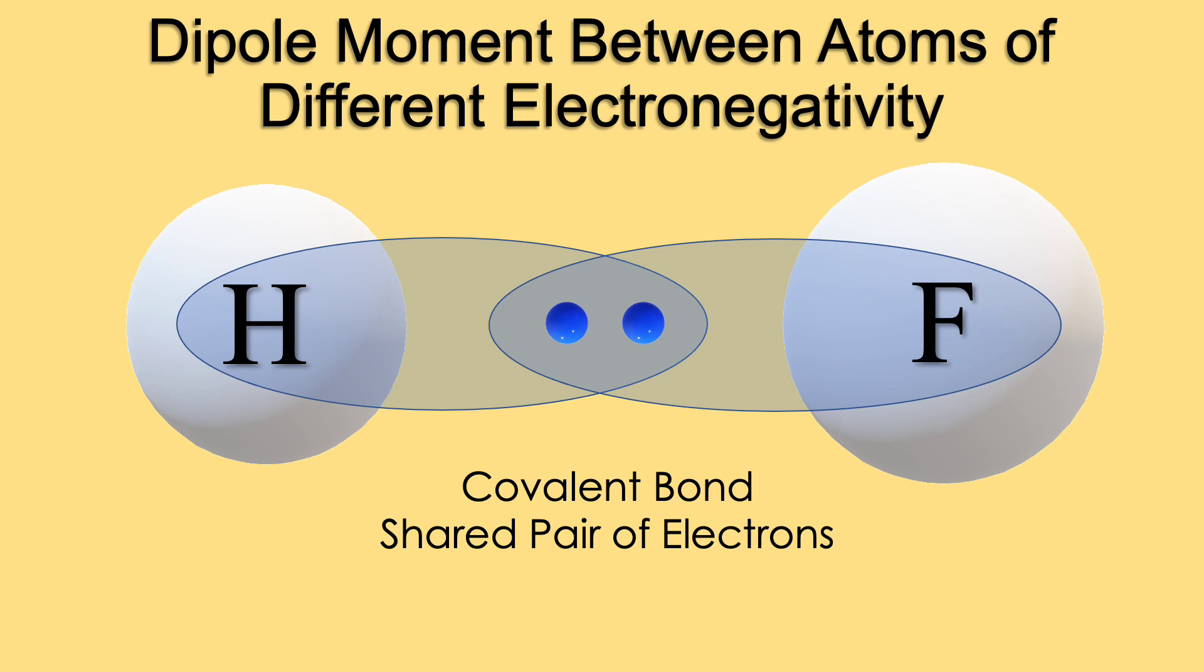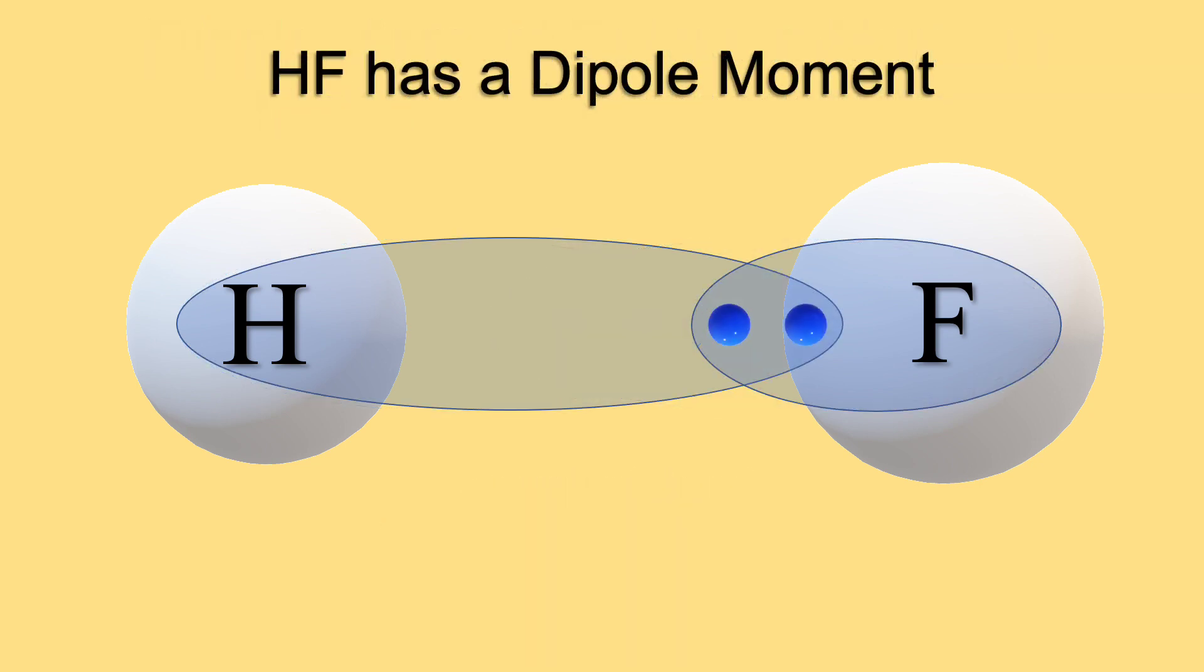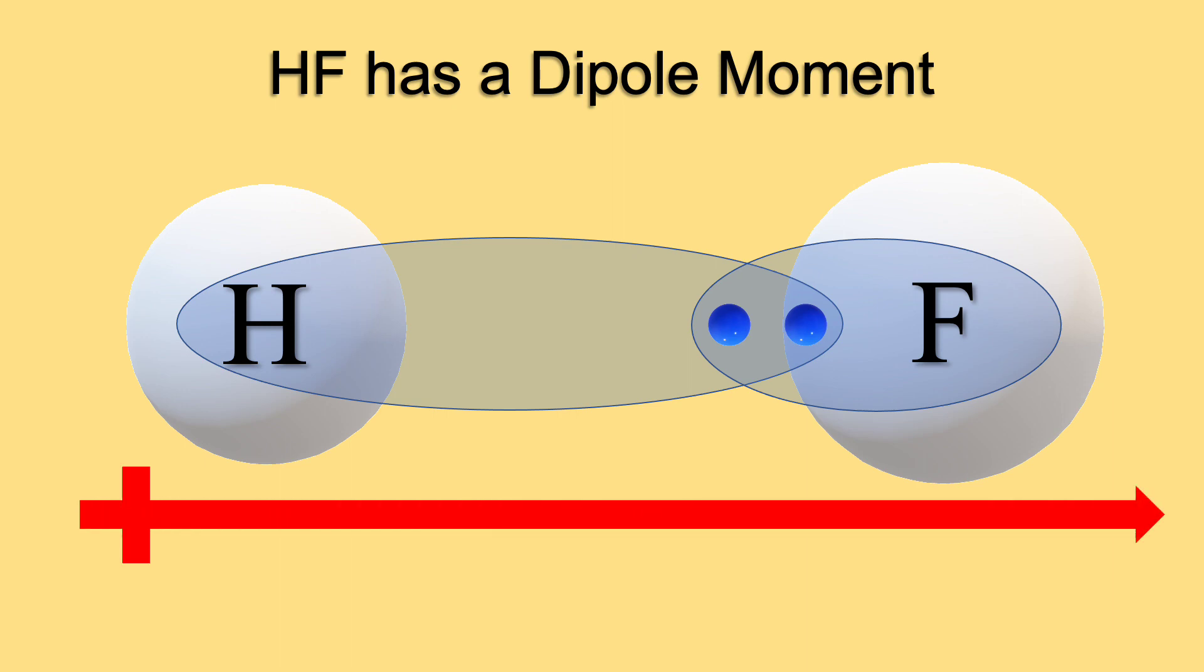Fluorine will pull the covalent bond, or shared pair of electrons, towards it. This results in a dipole moment. The electron density is uneven. Electrons are pulled closer to the fluorine. We can draw an arrow from the atom of less electron density toward the atom of more electron density, in this case from hydrogen to fluorine, and we can call this bond a polar covalent bond.